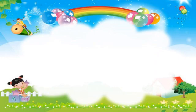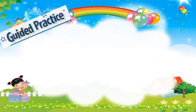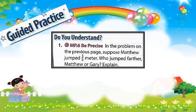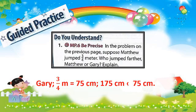Now let's have the guided practice. Number 1: In the problem on the previous page, suppose Matthew jumped three-fourths of a meter. Who jumped farther, Matthew or Gary? Explain. It's Gary. Three-fourths of a meter equals 75 centimeters. 175 centimeters is greater than 75 centimeters.